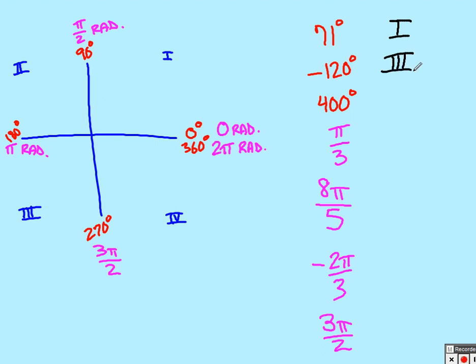400 degrees. Well, if I went the whole way around for 360, I still need to go another 40 degrees, so 400 would actually appear in quadrant 1 at the same place as 40 degrees.